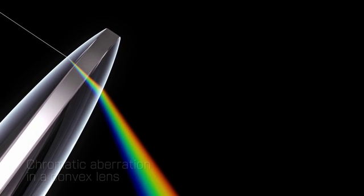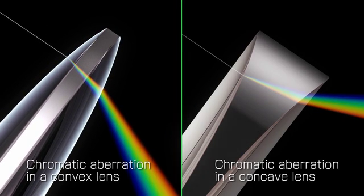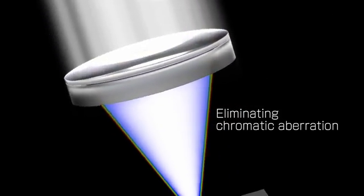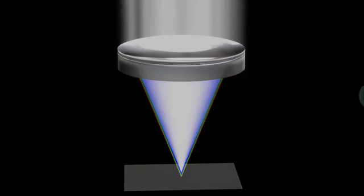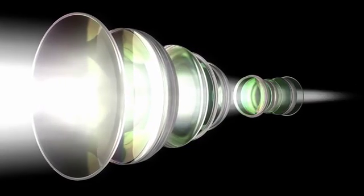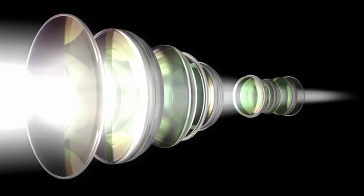The direction of chromatic aberration in concave lenses is reversed in convex lenses. Therefore, by combining both types of lenses, chromatic aberration can be negated. Through the careful arrangement of multiple concave and convex lenses, chromatic aberration can now be almost completely eliminated.